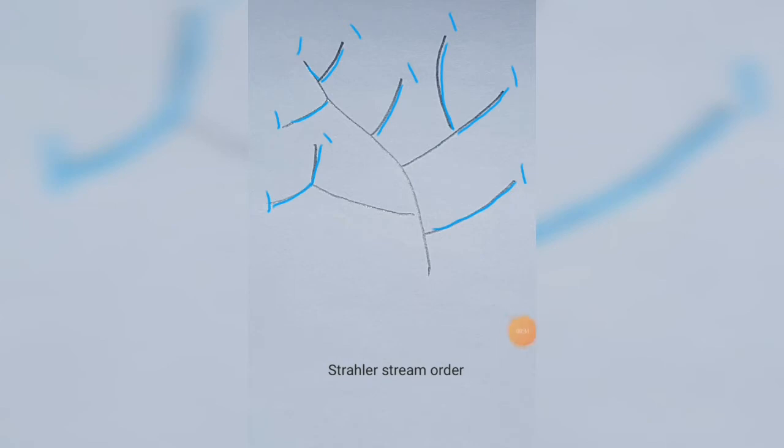I just color coded them to make it easier for you to see. So in the Strahler stream order, where two numbers of the same join, so where two, let's say, number one tributaries join, then you go up a number, so then to two.